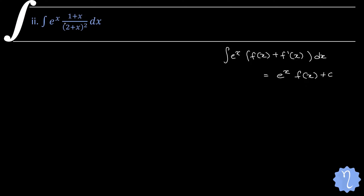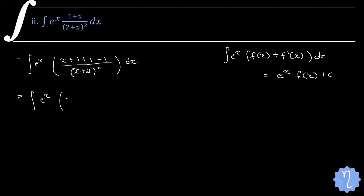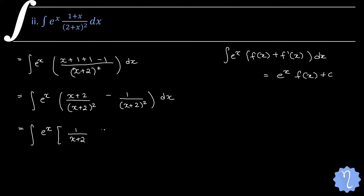To do this we will try to make the numerator look like the denominator. I will write this as integration of eˣ times (x+1+1)/(x+2)², so that it becomes (x+2) in the numerator. But then I also need minus 1. Splitting: (x+2)/(x+2)² minus 1/(x+2)², which gives 1/(x+2) minus 1/(x+2)².